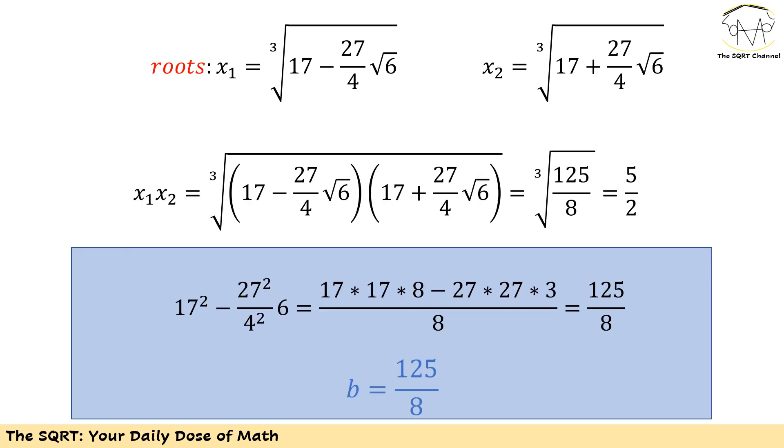I'm going to apply what I have in this box. 17² - (27²)(6)/4² is the final outcome. And if you just replace what we have here, you see the end is going to be 125/8. But I need to find the third root of this expression. So at the end x₁ × x₂ is going to be 5/2. Remember 125 can be written as 5³ and 8 is simply 2³.